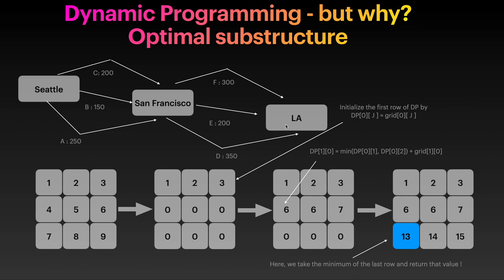Let's work on this problem. We have a two-dimensional matrix — we call that the grid. We will create a DP matrix of size N by N where N is the length of the matrix, and we are given a square matrix. For the first row, we initialize it by setting dp[0][j] equal to grid[0][j], so it's just the same values as the first row of the grid.